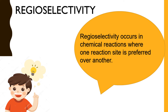Now for our second question: where to react? The answer is given by regioselectivity. Regioselectivity occurs in a chemical reaction where one reaction site is preferred over another. Regioselective reactions produce two or more products, and one of the products predominates. To understand regioselectivity, we will consider one example.